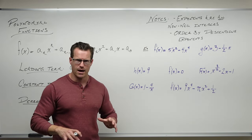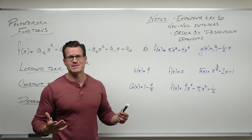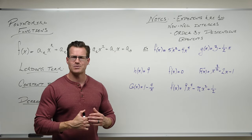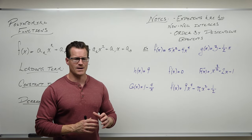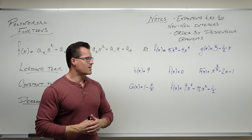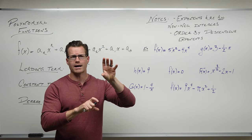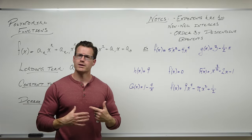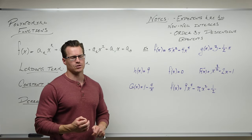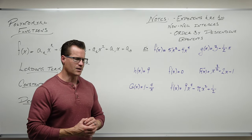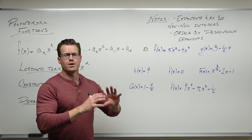Polynomials do not have fractional exponents — that means we don't have anything really nasty. Our domain is really easy: it's just all real numbers, because there's nothing crazy about polynomials. We don't have any negative exponents, which means we don't have a variable on the denominator. Why? Because that would give us asymptotes. So with polynomials, our domain is all real numbers all the time, and that's fantastic.